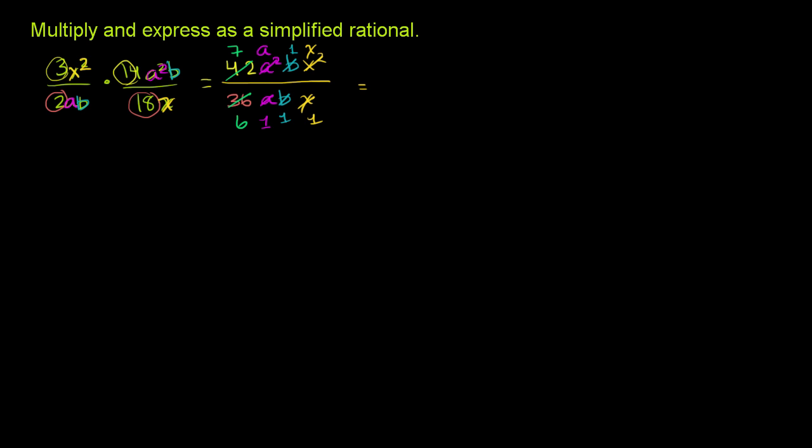So in the numerator, we are left with 7ax. We can ignore the b because it's just multiplying by 1 now. So we have 7. Let me do that same shade of green. We have 7 times a times x in the numerator. And then in the denominator, we have 6 times 1 times 1 times 1. So we have all 6's.